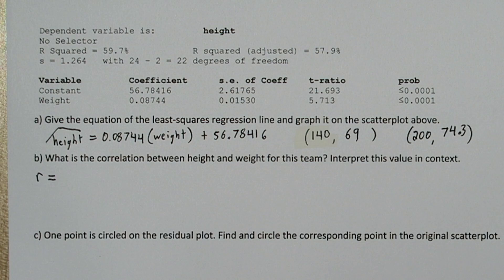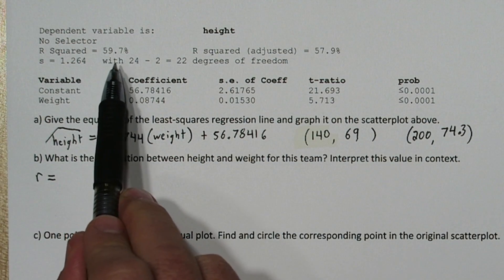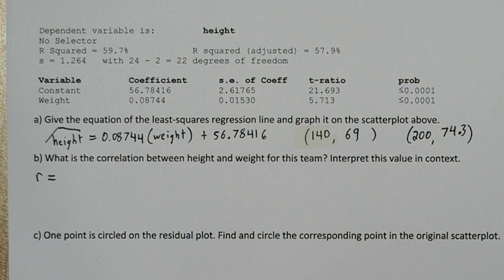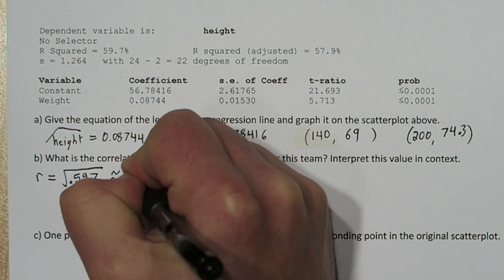Now correlation is r, but when we look through our computer output, we're not actually given r. We're given r squared, this value right here. Ignore r squared adjusted. So our r squared is 59.7%. If we take the square root of that, we can get our r.